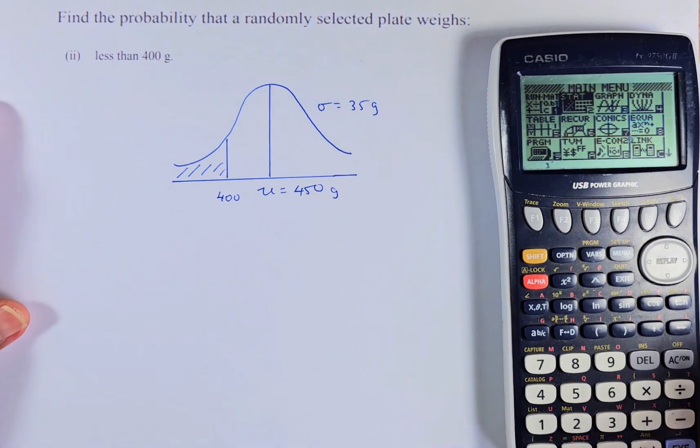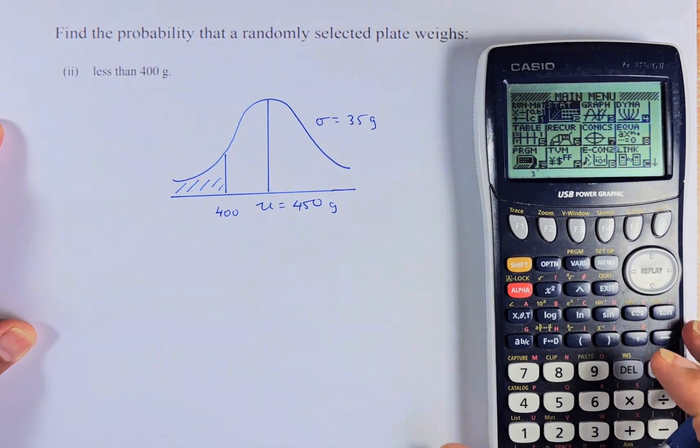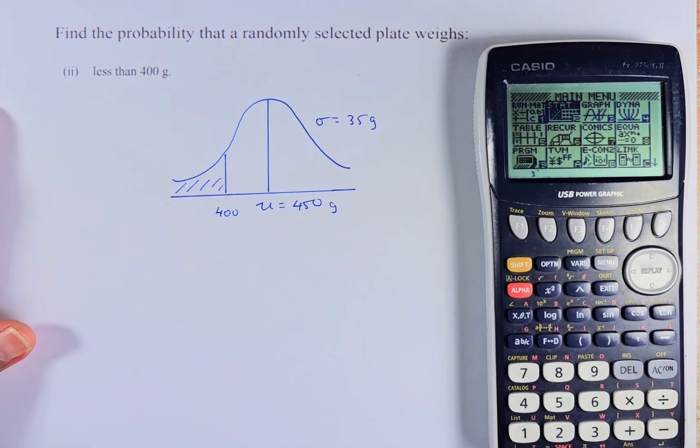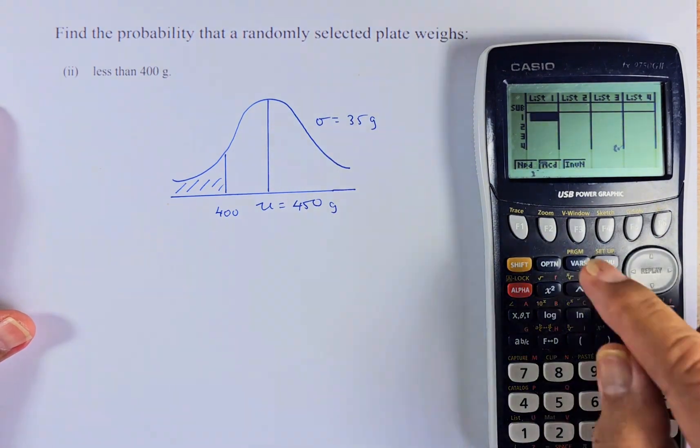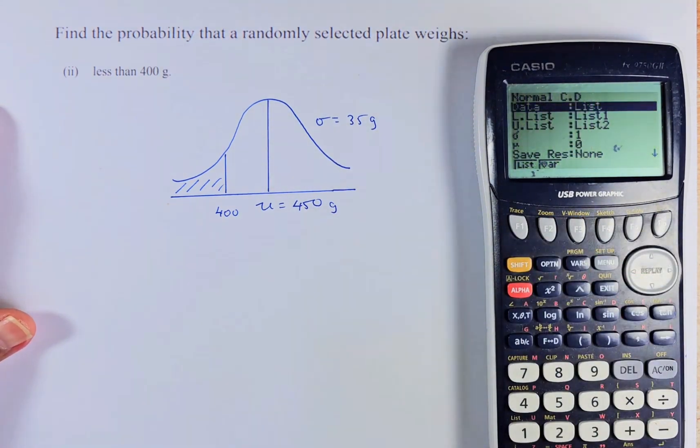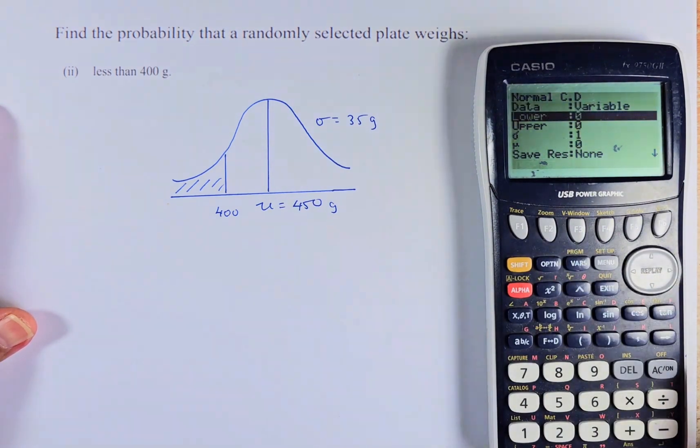Once we have done the diagram, we are going to put it into the calculator. So again, statistics. Now go to distribution again, F5. Normal, F1. NCD again, F2. Now we're going to key in the data. As usual, it's going to be variable. And then we are going to bring it down.